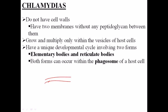Because they grow only within a host cell vesicle, Chlamydia and Rickettsias are called obligate intracellular parasites. Whenever we need to grow Chlamydia, we need a host cell. Inside that host cell, the Chlamydia will grow inside a vesicle, divide, form offspring, leave the cell, and start to infect other cells.